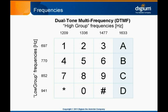DTMF stands for dual-tone multi-frequency. Each digit on a standard telephone keypad is represented by a combination of two unique tones, one from the column on the left and another from the row at the top. These frequencies were carefully chosen to minimize the likelihood of confusing one tone with another.